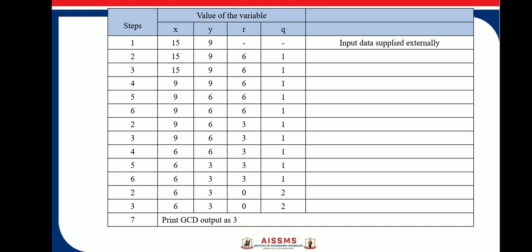Now here, remainder is 0. So therefore, we will compare R with 0. If it is 0, then go to step 7, which is occurred in step 3 and here, it is observed that in step 7, we will print content of Y, where Y is nothing but 3 and the greatest common divisor of 15 and 9 is 3.